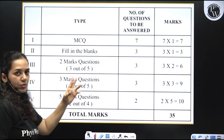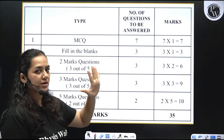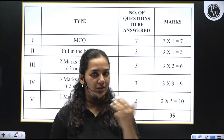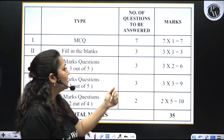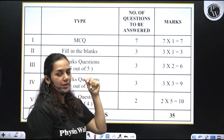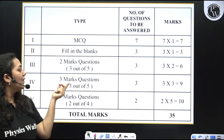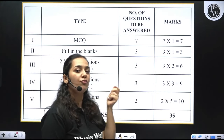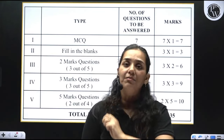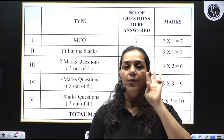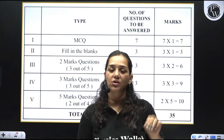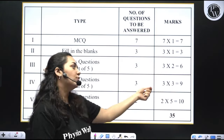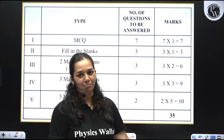Next is the two-marks question: 5 questions, carrying 6 marks, and you will have a choice. For the three-marks questions, there are 5 questions and you have to answer 3 of them, giving you 3 × 3 = 9 marks.